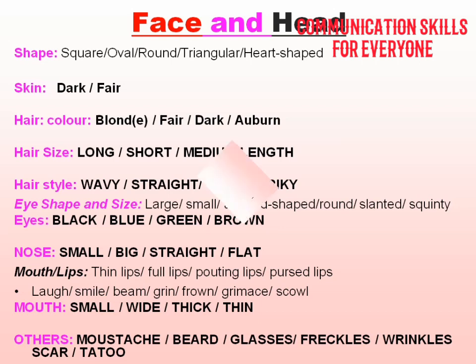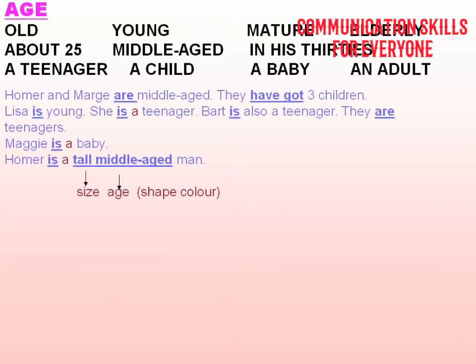Next is age. You can describe someone as an old man, a young person, mature, elderly, about 25 years old — just guessing — middle-aged, in his 30s, a teenager, a child, a baby, or an adult. For example: Homer and Marge are middle-aged; Lisa and Bart are teenagers; Maggie is a baby.